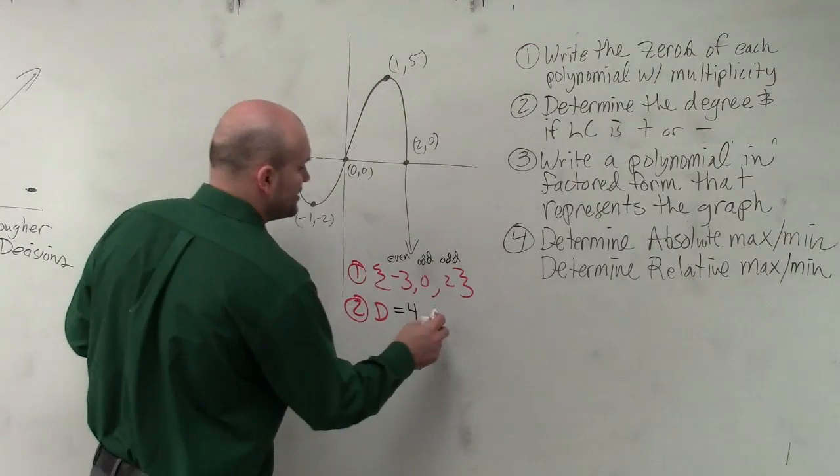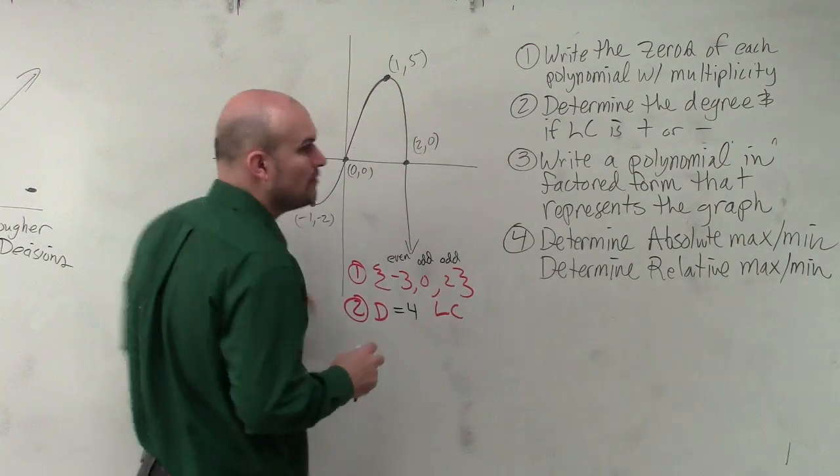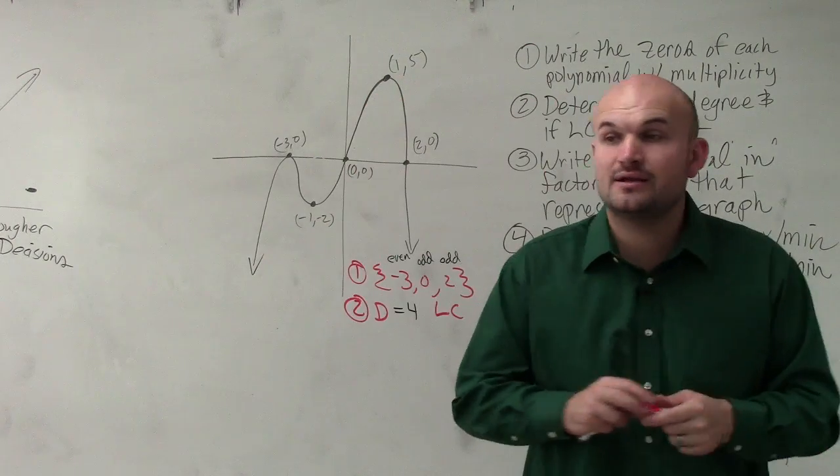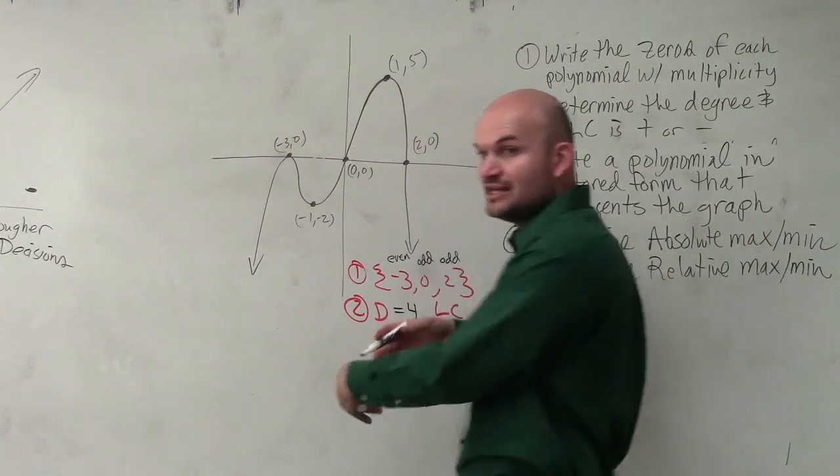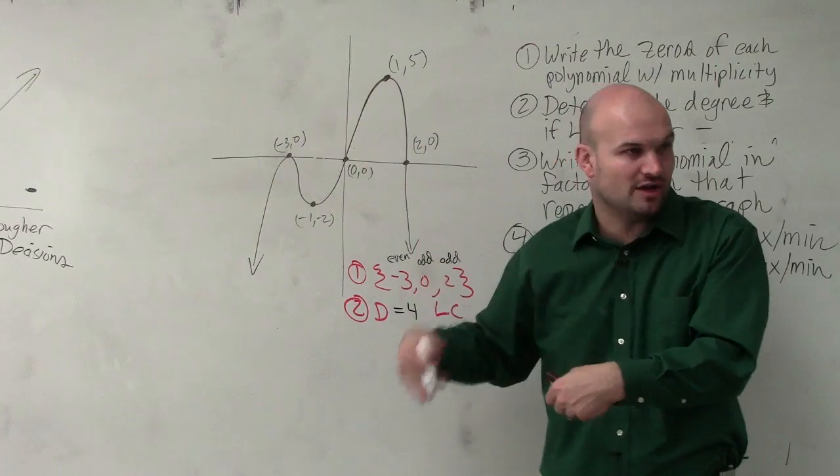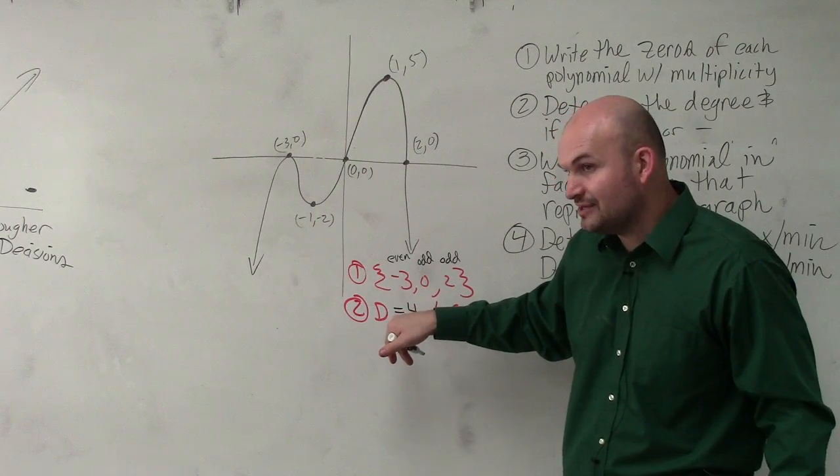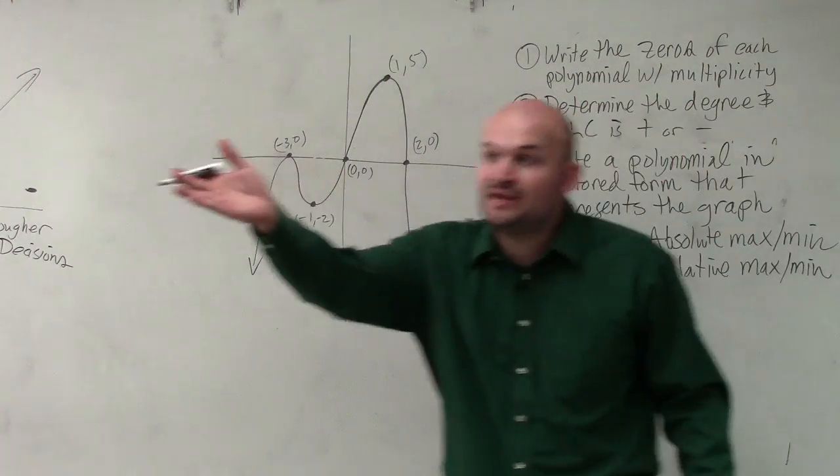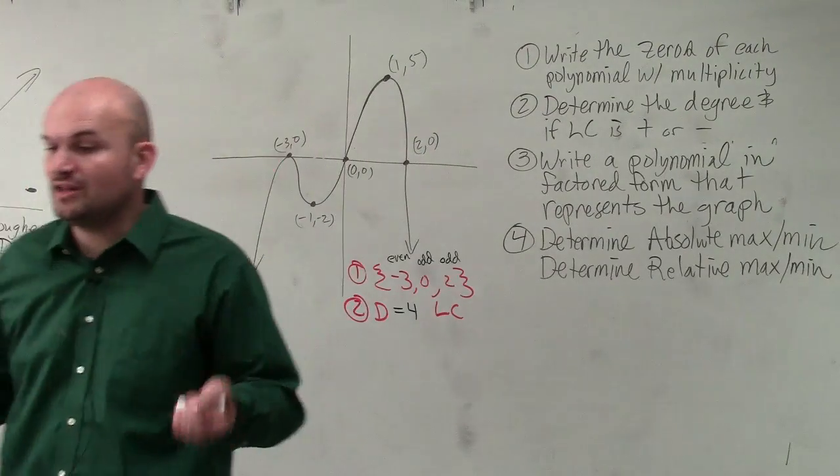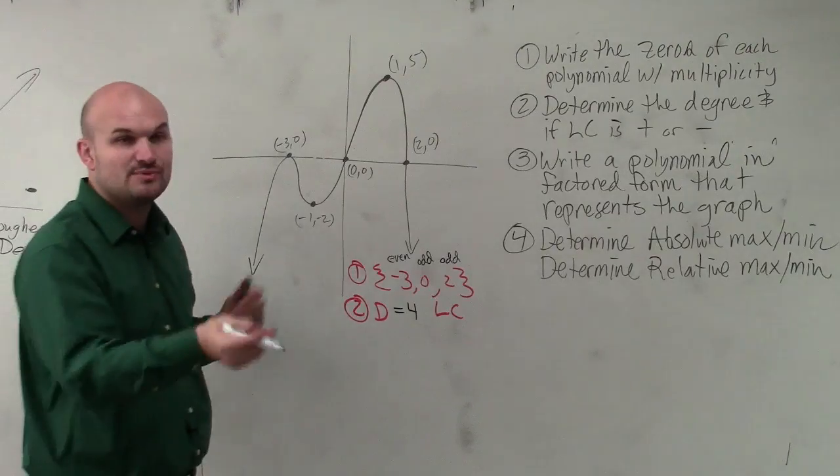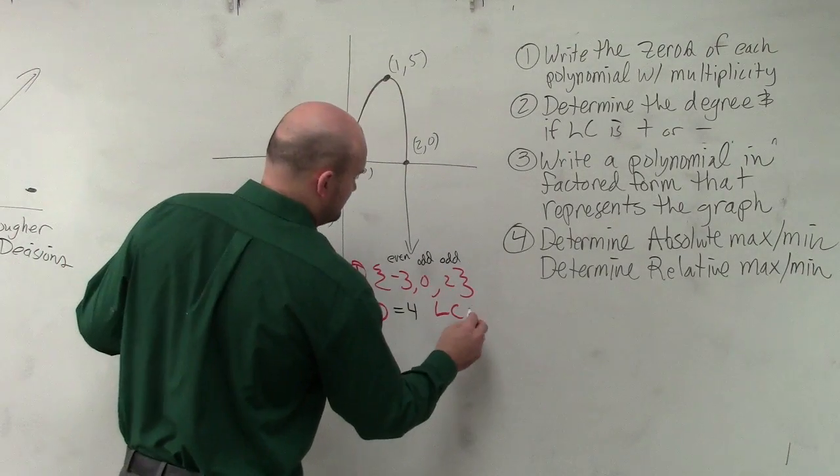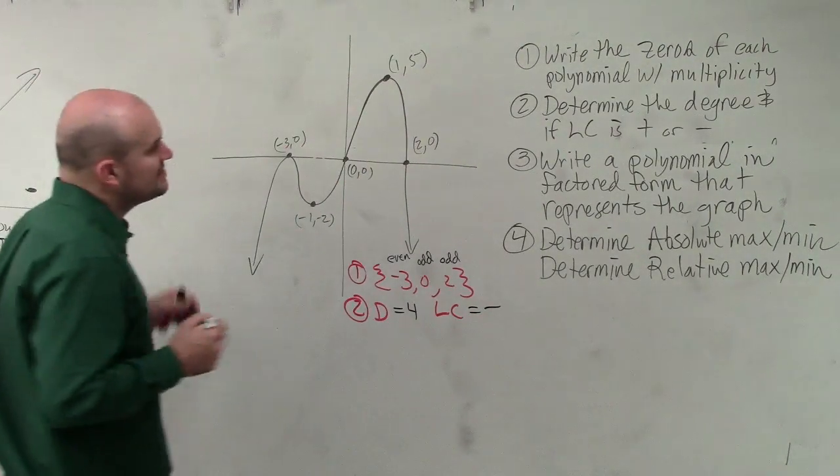Now the next thing is we need to determine the leading coefficient. Is that leading coefficient positive or negative? We look at it and say, is the graph opening up or opening down? You can see they're both falling left, falling right. We know the degree is even. So when you look at your end behavior and see that they're both falling left, then we determine that the leading coefficient has to be negative.